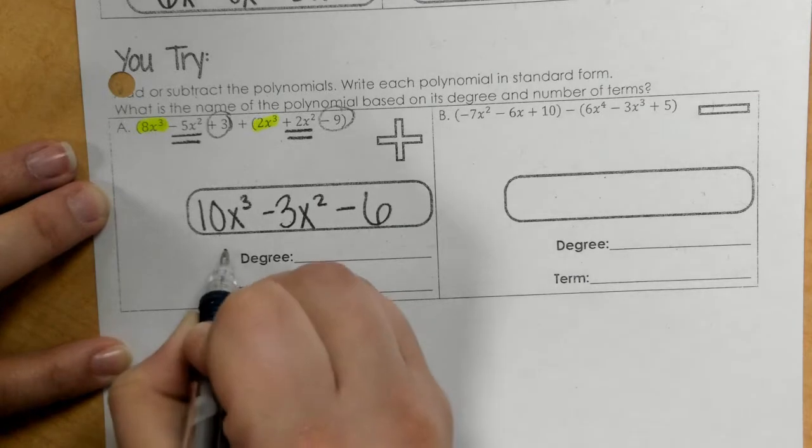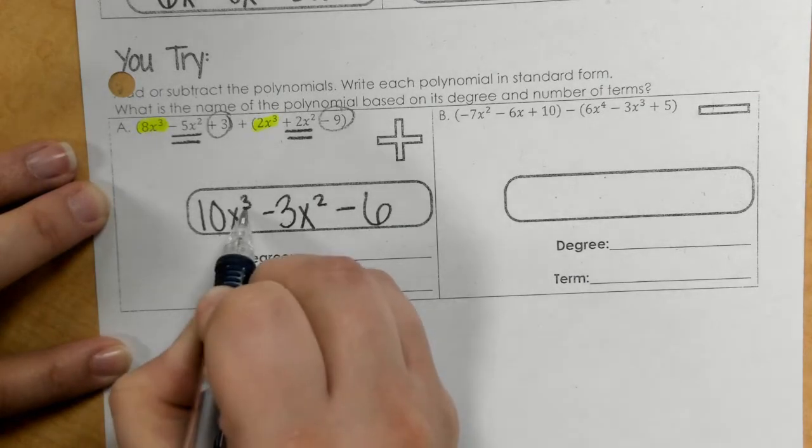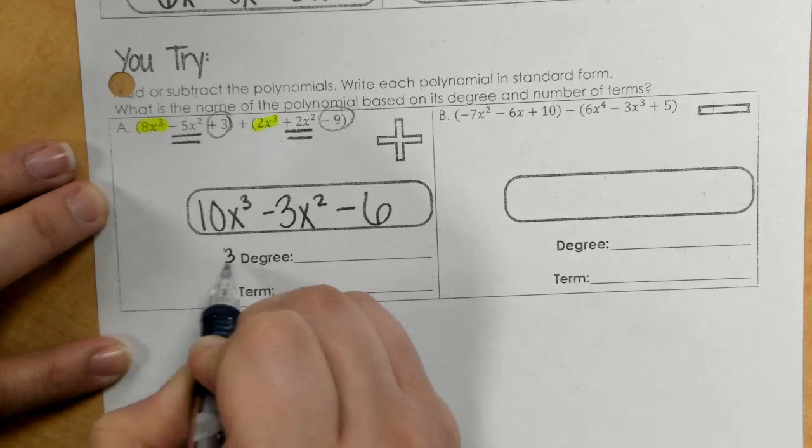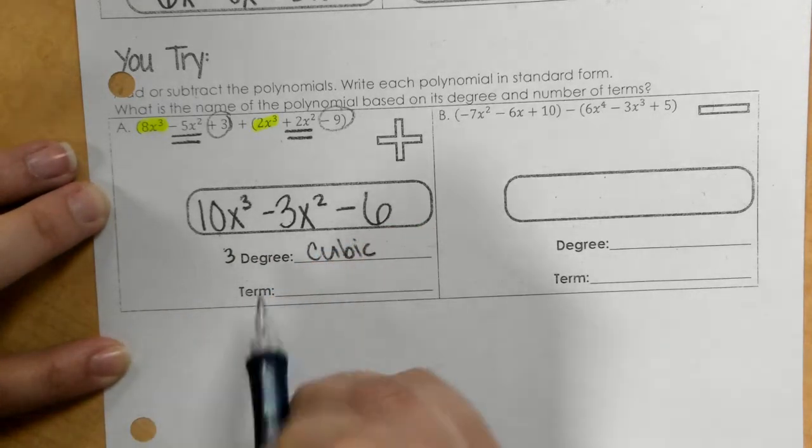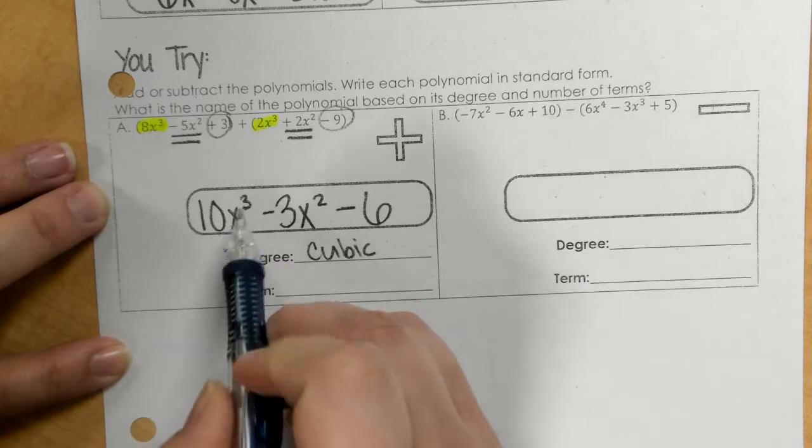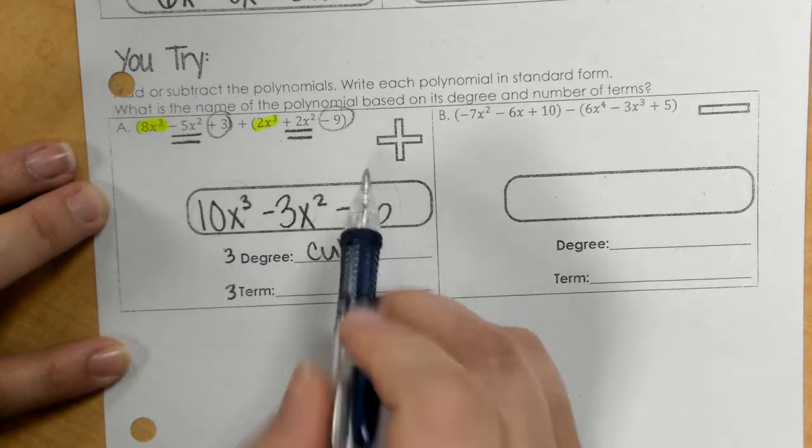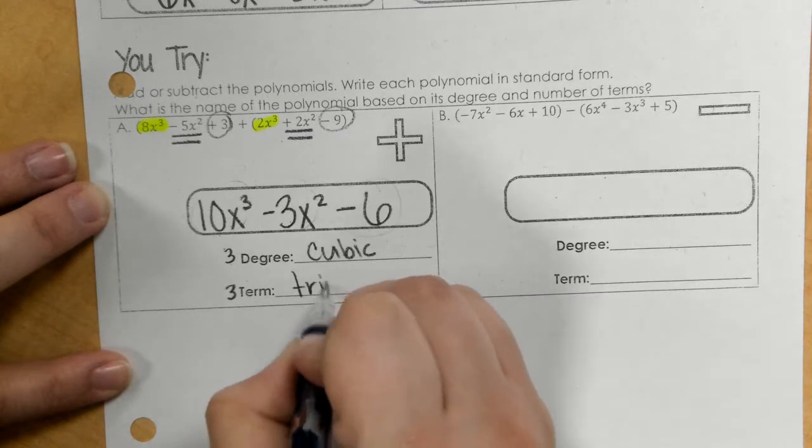So by degree, that's a 3, because there's a 3 right here. Exponent of 3 is my degree. And that's called cubic. And the term is also 3, because I have 1, 2, 3 terms. And that's a trinomial.